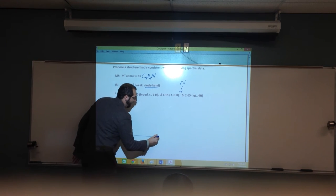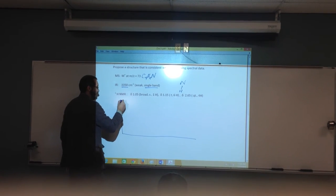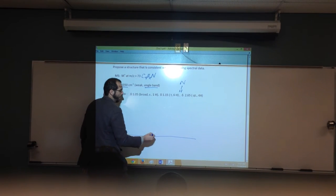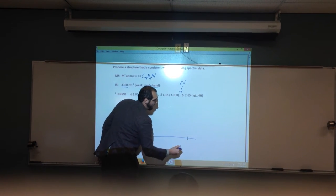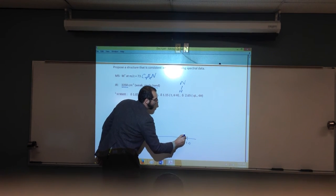In fact, let's go ahead and draw what the NMR looks like so we can see it. So what do we got? One point, so we'll say that's like 1.0, so 1.05, that's somewhere around there.